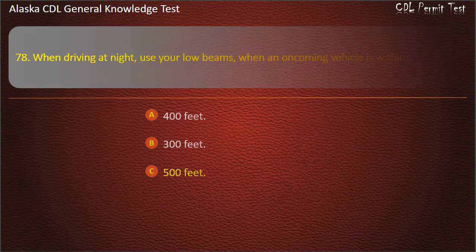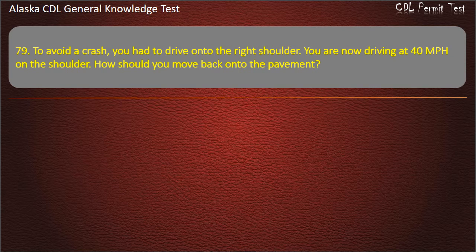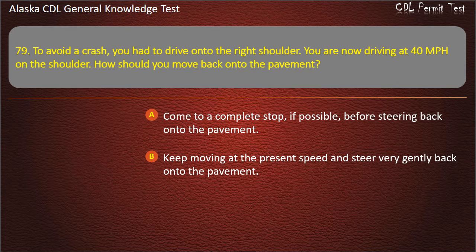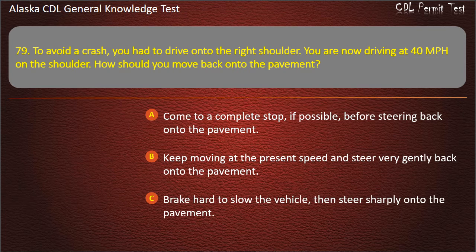Question 79. To avoid a crash, you had to drive onto the right shoulder. Come to a complete stop if possible before steering back onto the pavement; keep moving at the present speed and steer very gently back onto the pavement; or brake hard to slow the vehicle. Answer: Come to a complete stop if possible before steering back onto the pavement.